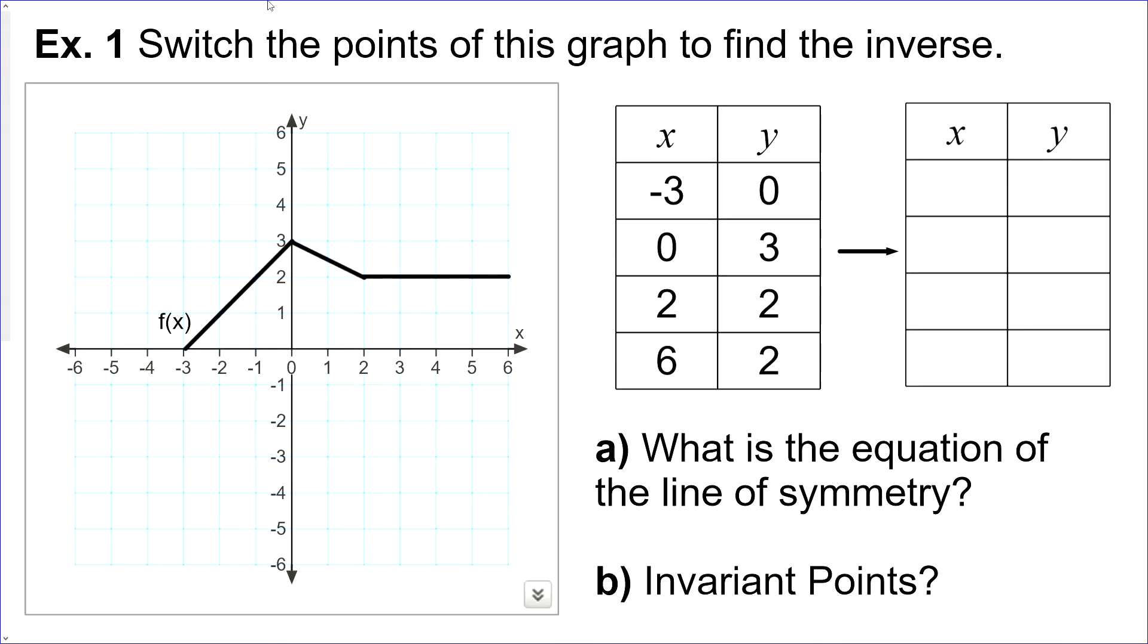Let's try an example where we don't have the equation. We only have the graph here of f of x. Now, to find the inverse, we're going to take every point here and switch the x and the y value. So this point, negative 3, 0, becomes 0, negative 3. This one becomes 3, 0. This one doesn't change. So it would be invariant. And this one, 2, 6.